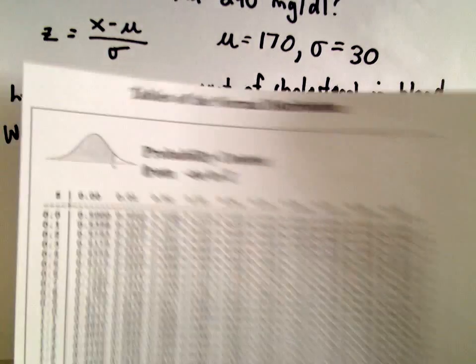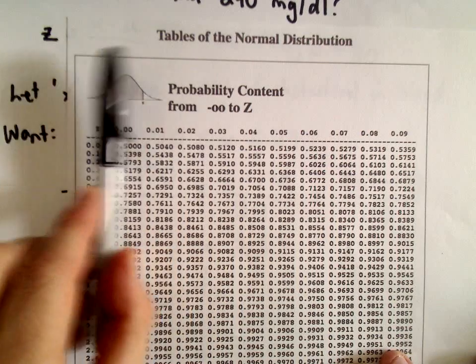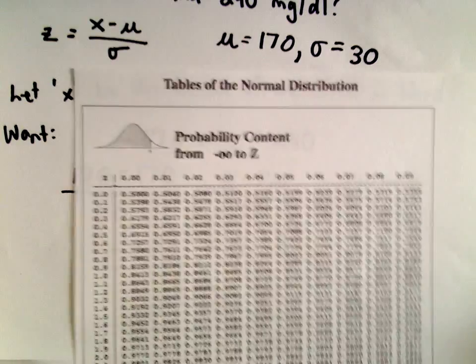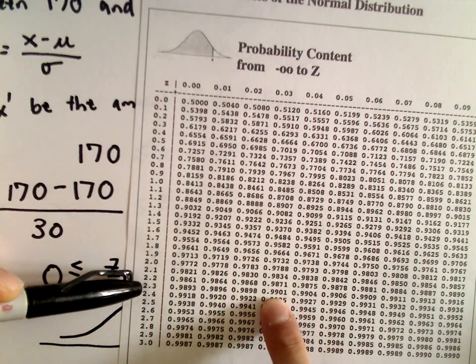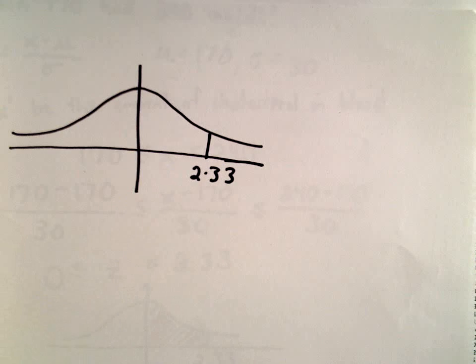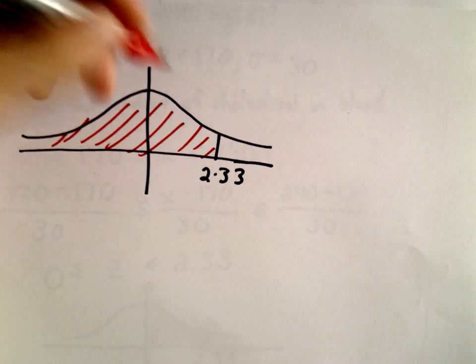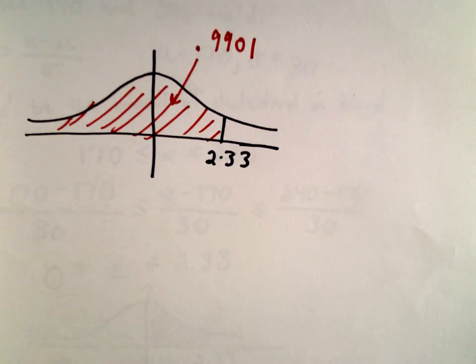We have to be careful when reading from the table, because the table gives us everything to the left — the area underneath the curve to the left of a particular z-score. For z equals 2.33, the table gives us 0.9901, meaning the total area to the left of that z-score is 0.9901.